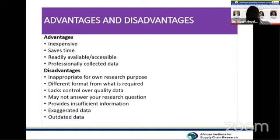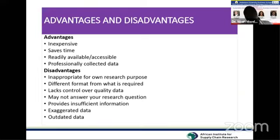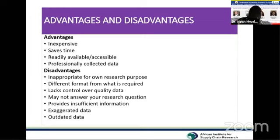For example, in procurement and supply chain research, data can be collected from specific professional procurement people in different procurement and disposal entities who are competent to provide the required information. Once that data is collected, future researchers can use it with confidence, knowing it was gathered by professionals.